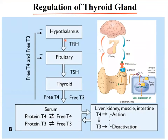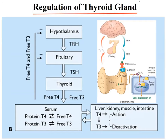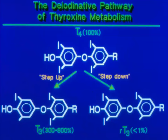After T4 and T3 are released peripherally, deiodinases convert T4 to the more active T3. The feedback hormone is mostly T4, which is why TSH and T4 are negatively correlated. There are two possible deiodinase processes: a 'step-up' deiodination removes iodine from the outer ring of thyroxine, producing T3 that is about 500 times more potent than T4. The other product is reverse T3, which is completely ineffective — less than one percent of the original T4 effect.